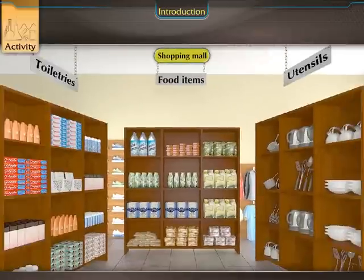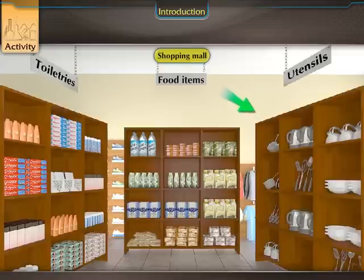In a shopping mall, toiletries are kept on separate shelves. Utensils are kept on different racks. Food items are kept in a different section.